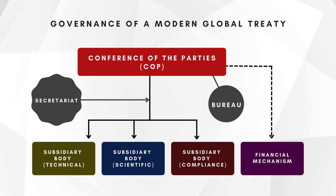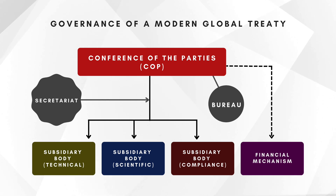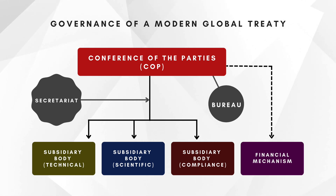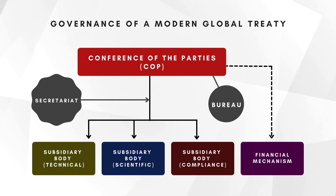Many treaties have subsidiary bodies established by the COP and operating under its authority. These are usually specialist bodies, composed quite often of experts on a certain issue, mandated to address specific issues like scientific research, technical assistance, compliance, or verification. The Bureau is an executive body that manages treaty work between sessions of the COP. Then you have the Secretariat — an entity composed of paid individuals, usually employees of a hosting organization — tasked with managing the work, preparing and servicing meetings of the COP and subsidiary bodies, and carrying out other tasks such as compiling information, studies, and projects.